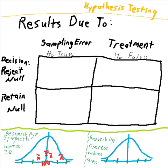Then we have to make a decision to either reject the null hypothesis or to retain the null hypothesis. Sometimes the results will be due to nothing other than just sampling error.